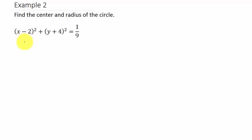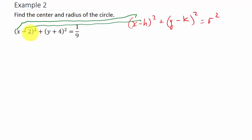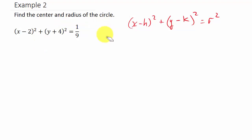Now let's look at another example: x minus 2 squared plus y plus 4 squared equals 1/9. Writing down the standard equation of the circle again, we can see our x term with a minus sign, so h would be 2. Now looking for k, we notice there's a plus sign here, whereas the standard form has a minus sign.